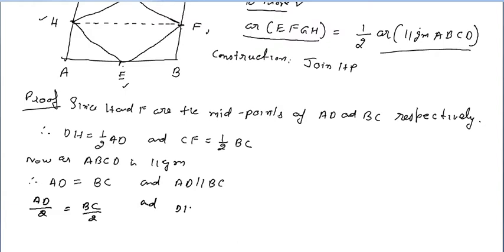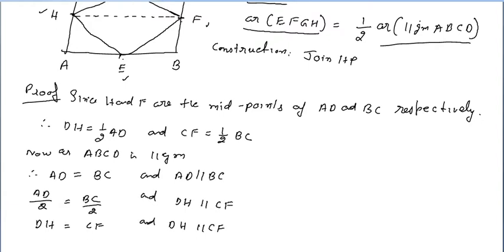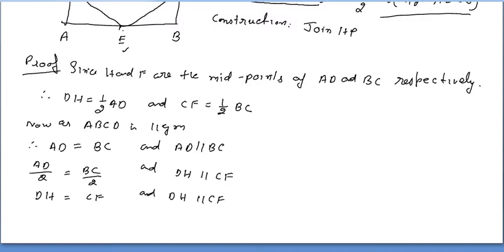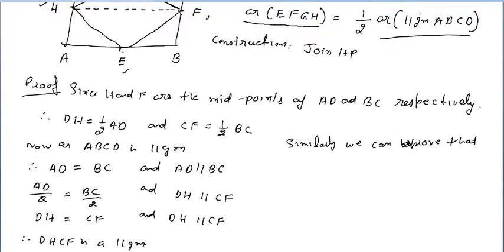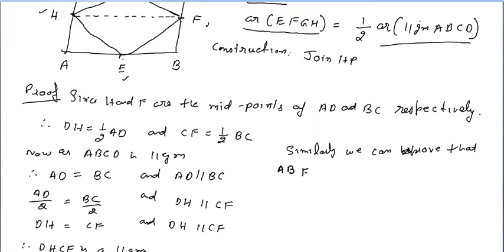And the halves are also parallel. Half of AD is DH, and half of BC is CF. Therefore DH is parallel to CF and DH equals CF. So DHFC is a parallelogram. Similarly, we can prove that ABFH is also a parallelogram.